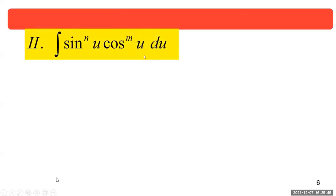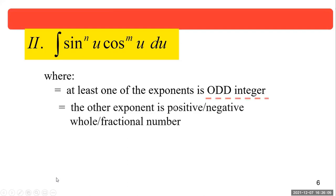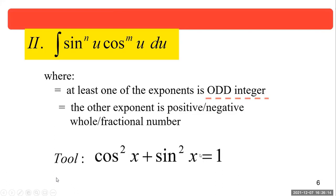What if you have a combination of sine and cosine? We place different powers — one is n, one is m — so they can have different powers. If at least one of the exponents is an odd integer, the tool is still the same: the Pythagorean identity. If at least one is odd, we proceed the same way.